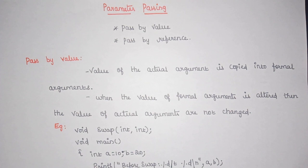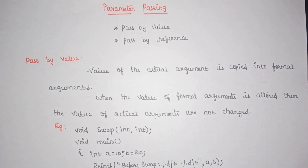Coming to pass by value: when you are passing the value of the actual argument to a formal argument, this method is called pass by value. The value of the actual argument is copied into the formal arguments. When the value of formal arguments is altered, the actual arguments will not get changed.